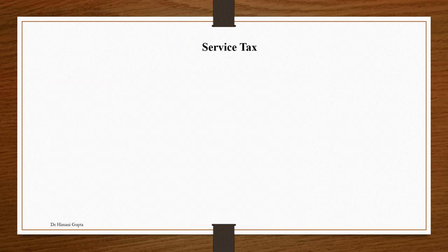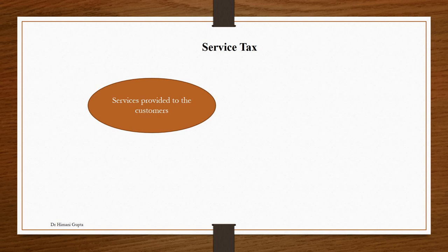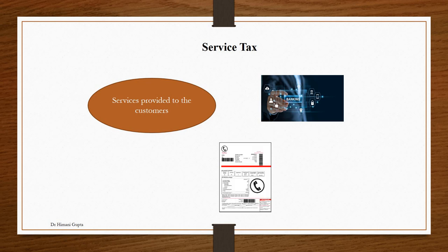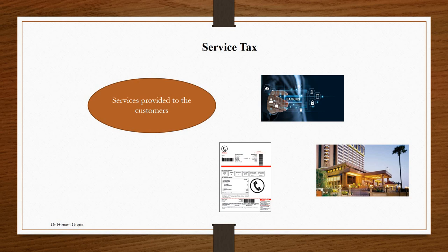Next is service tax, which is applicable on services provided to customers. For example, banking is a service industry — whenever you go to a bank and do a transaction, service tax was applicable on those transactions. Telephone and telecommunication industry is also a service industry, so service tax was applicable on telecom bills. If you go to a hotel and take a room on rent, service tax was applicable on that rent. But now service tax is subsumed under GST.